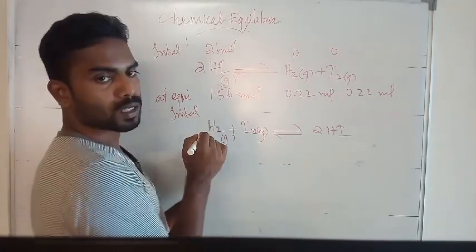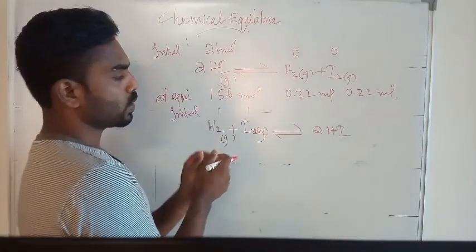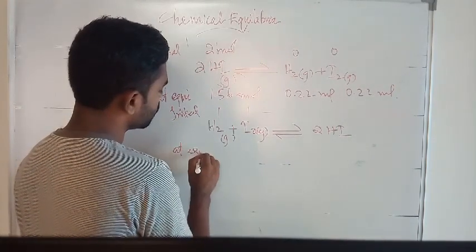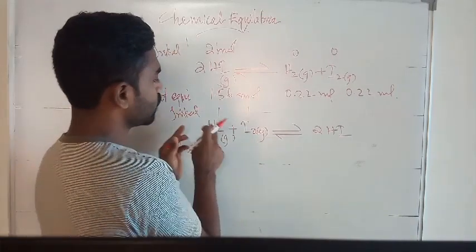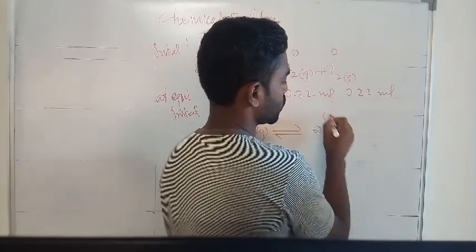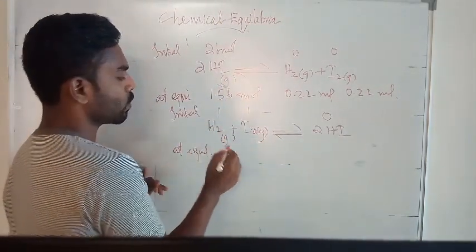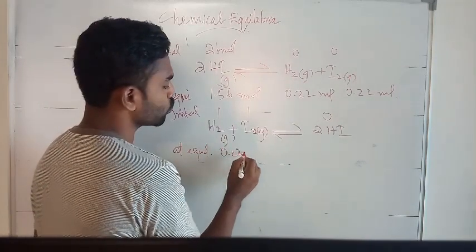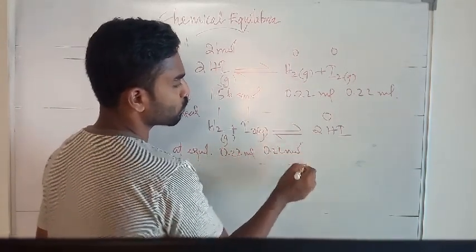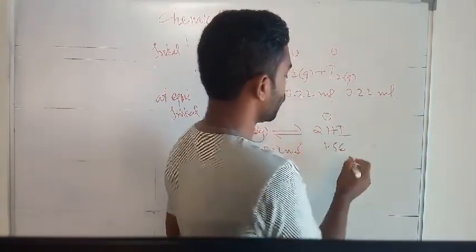Starting with 1 mol of H₂ and 1 mol of I₂, at equilibrium the concentration of H₂ becomes 0.22 mol, the concentration of I₂ becomes 0.22 mol, and the concentration of 2HI becomes 1.56 mol.